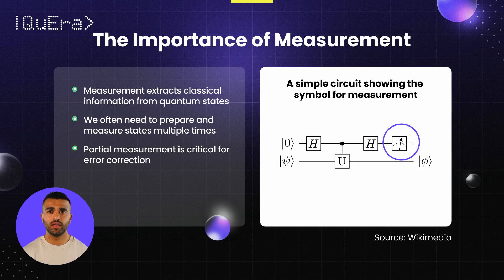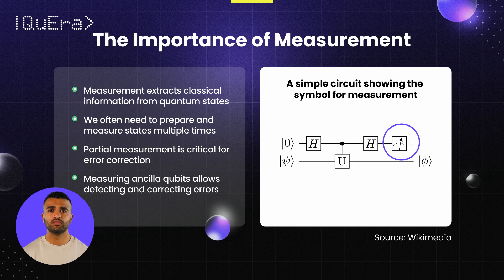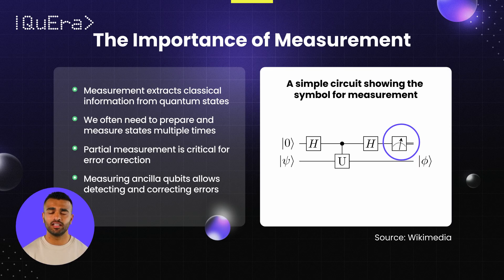By measuring only certain qubits, often referred to as ancilla qubits, we can detect errors in the system without collapsing the quantum states of the computational qubits. This capability allows for the detection and correction of errors.